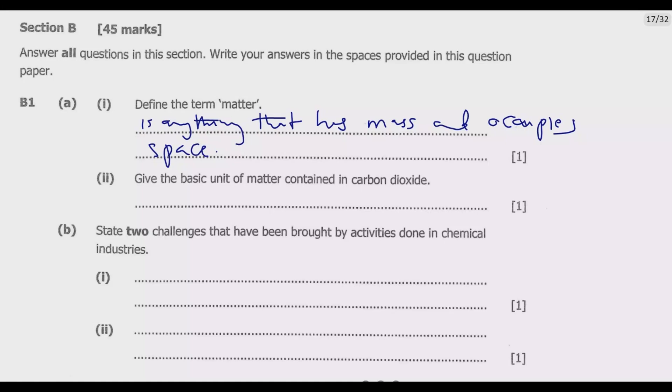Part A(ii) says give the basic unit of matter contained in carbon dioxide. Carbon dioxide is given by the formula CO2. So the basic unit of matter in carbon dioxide is one atom of carbon and two atoms of oxygen. That's the basic unit of matter contained in carbon dioxide.